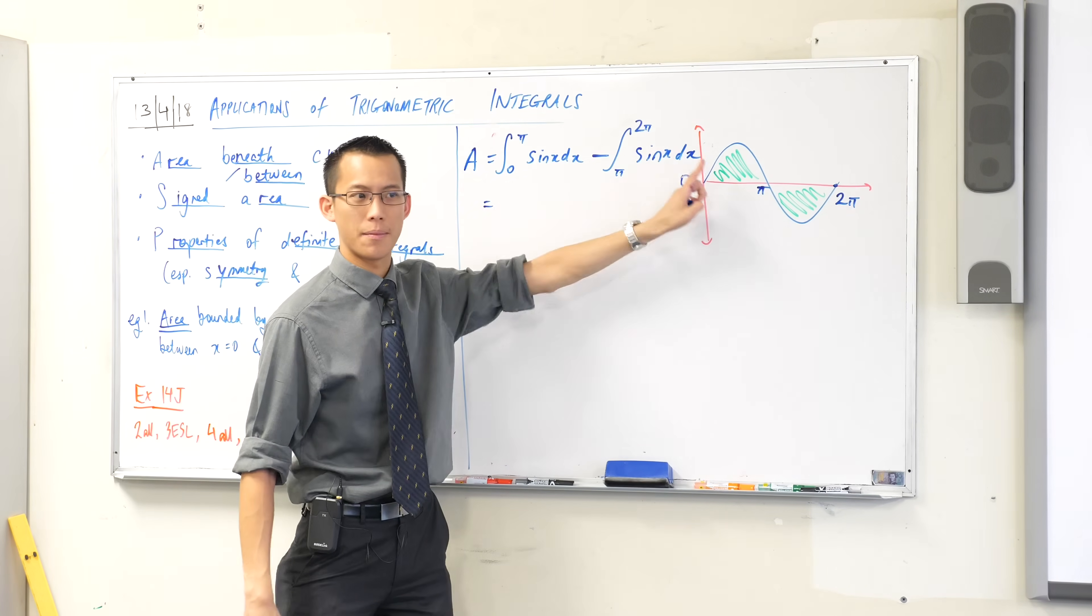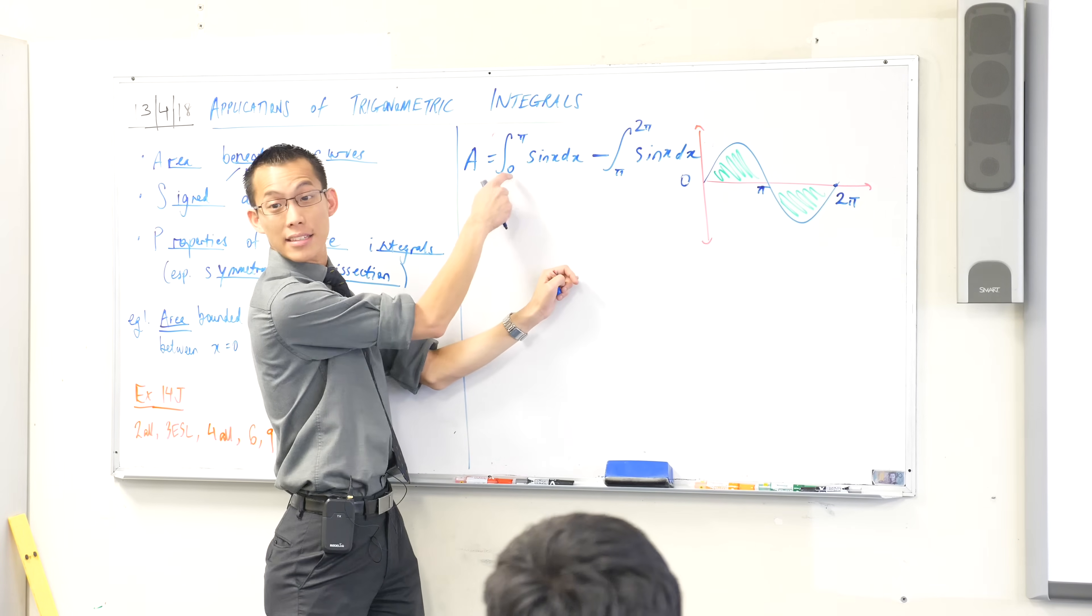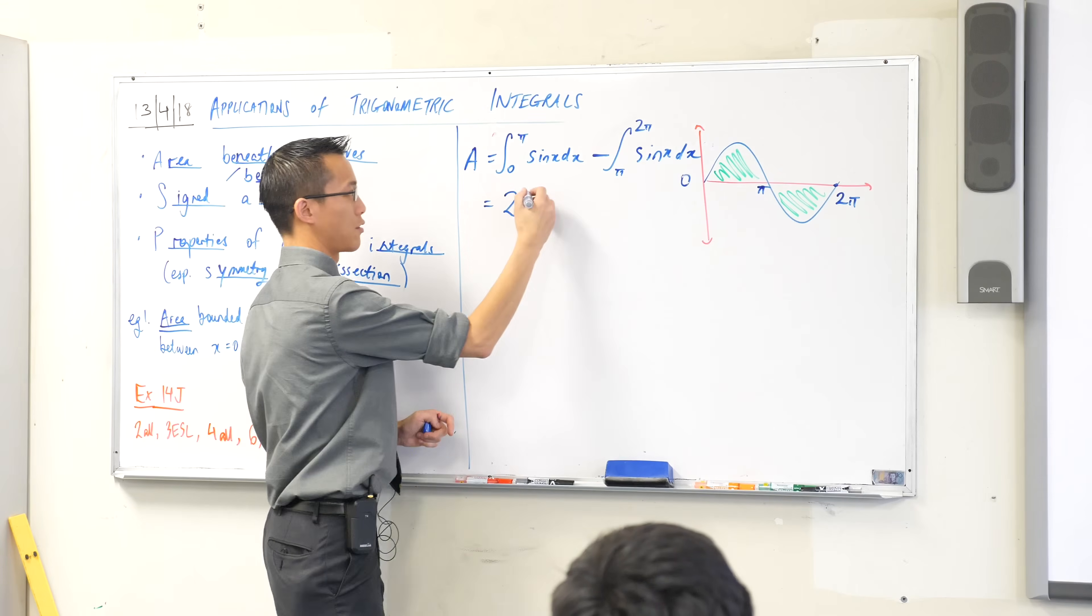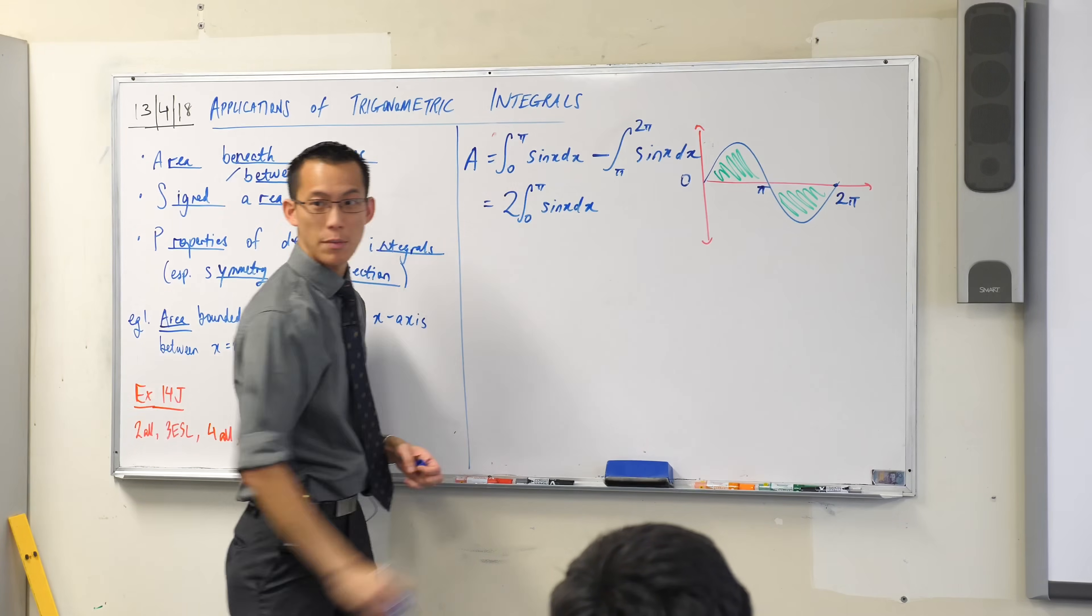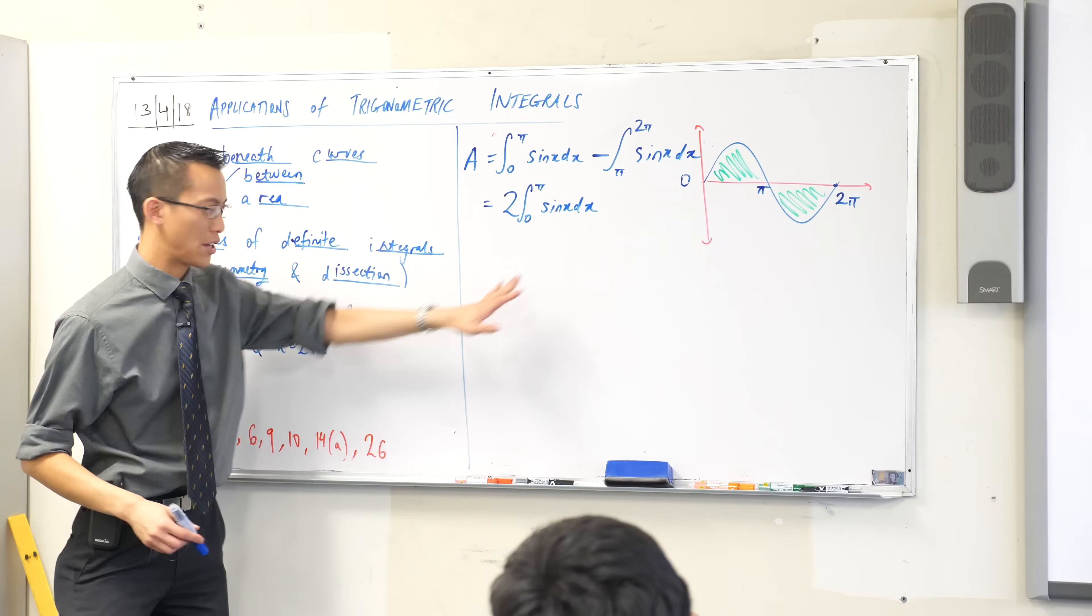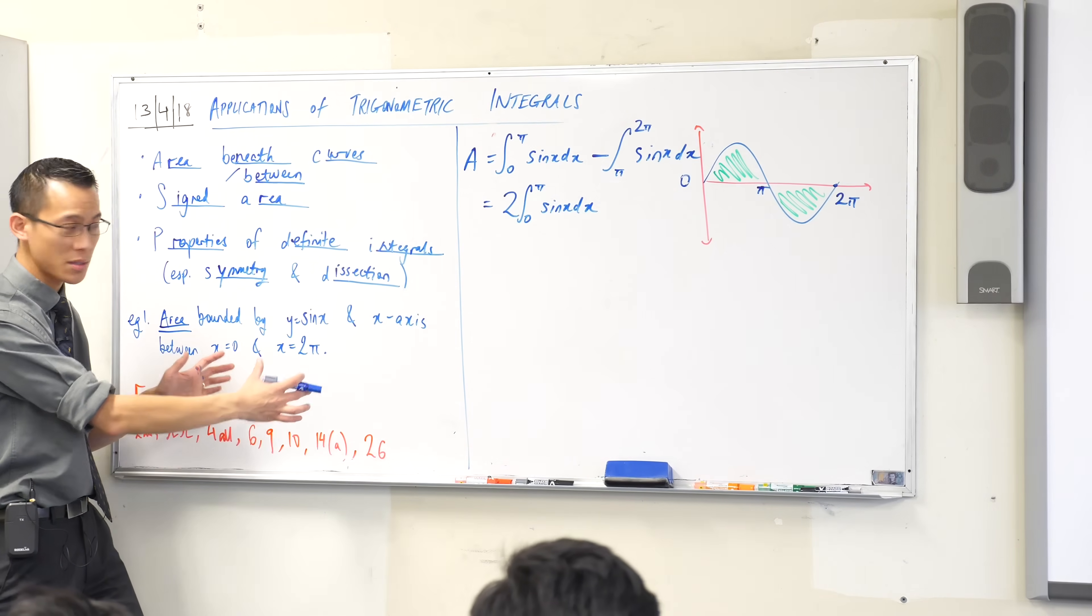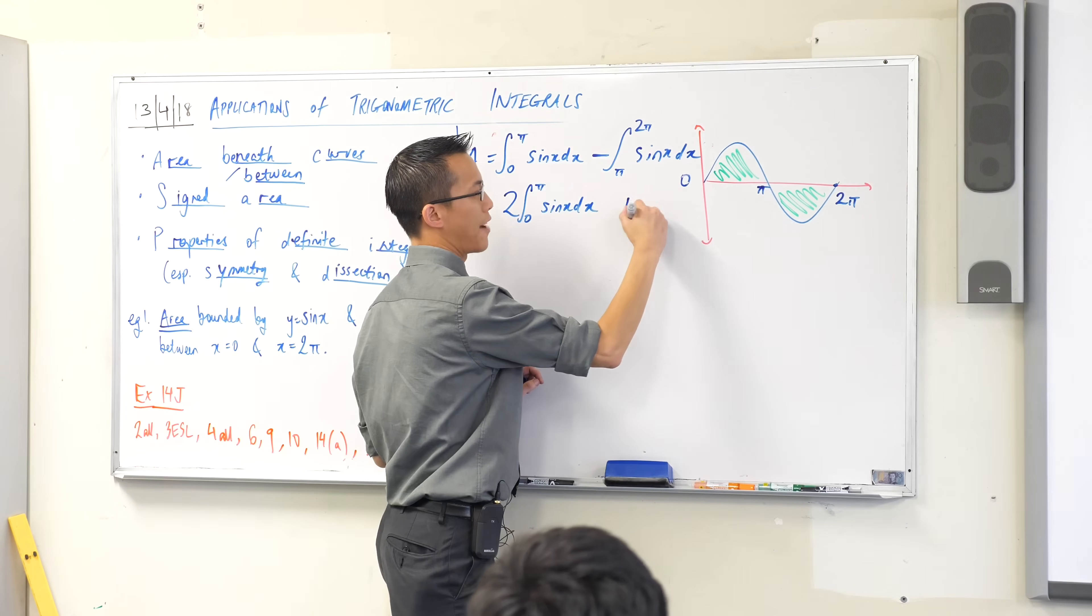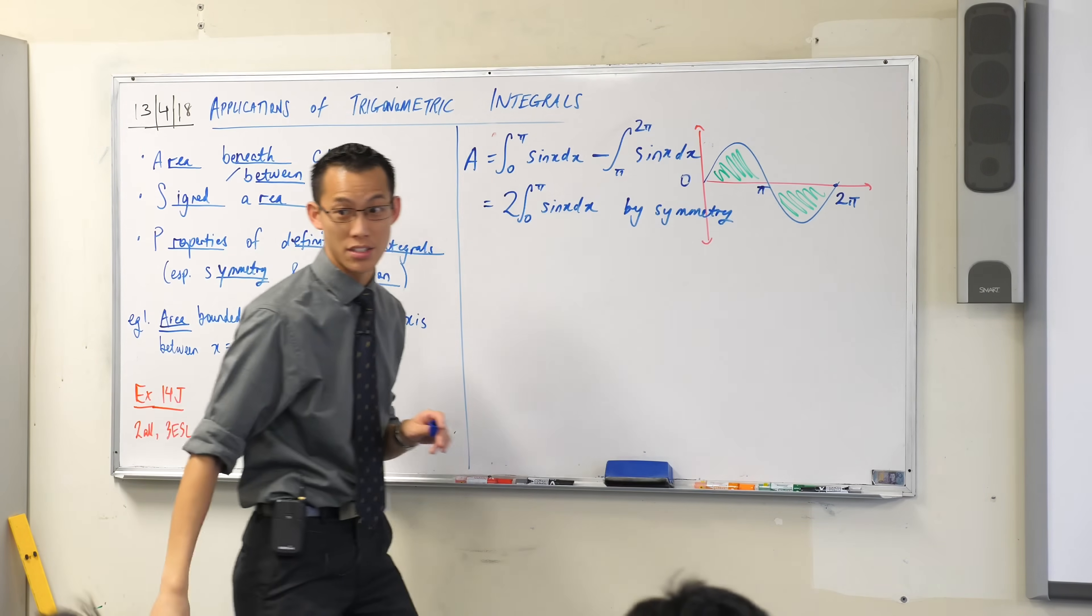Which one do you think is easier to evaluate? The first one is, right? Why? It's zero. We like zeros, right? So what I'm going to do is I'm going to say two lots of the first integral should give me exactly the same thing, okay? Now I'm not going to write this first because it doesn't take into account all the information in the question. Does that make sense? But I can say this clearly goes into this, and I'm even going to give a reason.